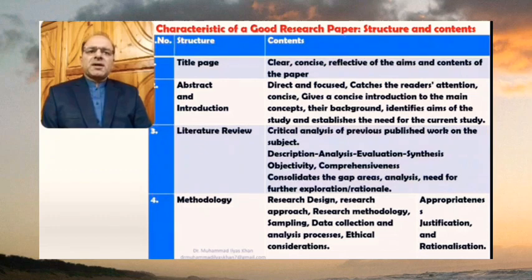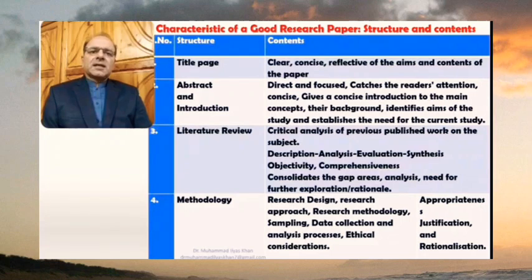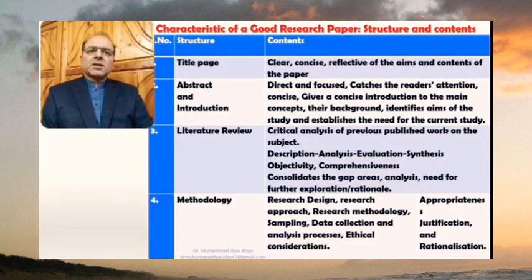They should be properly justified, so there should be rationalization. What research design has been adopted, what specific research methods and approaches have been adopted — there should be justification and rationalization for those, and for the selection of sample and for the selection of data collection and analysis processes. You are not just listing these subsections of the methodology, but justifying and rationalizing them in order to make the methodology section a strong section that will lead to the quality of the research paper.